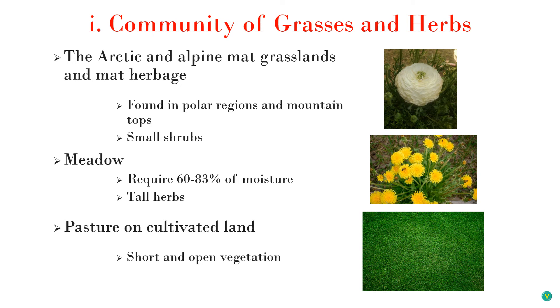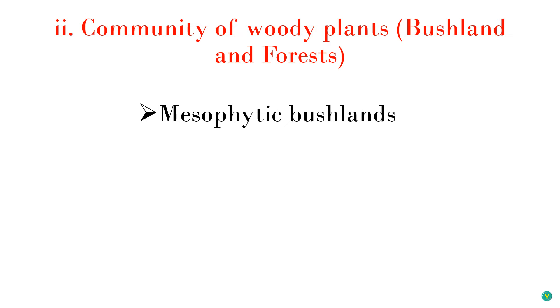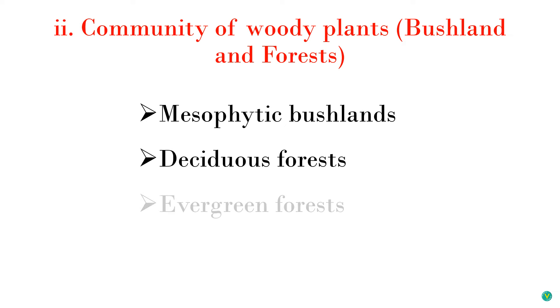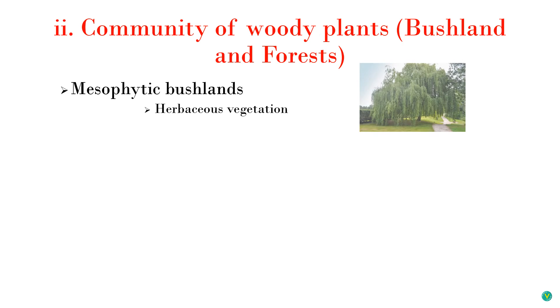In pasture and cultivated lawn, the vegetation is shorter and more open; grazing activities generally disturb this type of vegetation. The other community of mesophytes is the community of woody plants. Under this category there are three subcategories: mesophytic bushland, deciduous forest, and evergreen forest. Mesophytic bushland occurs where temperature and other climatic conditions are not favorable for forest growth, but herbage vegetation develops.